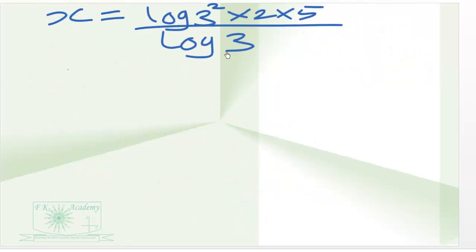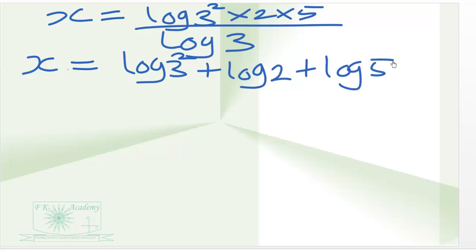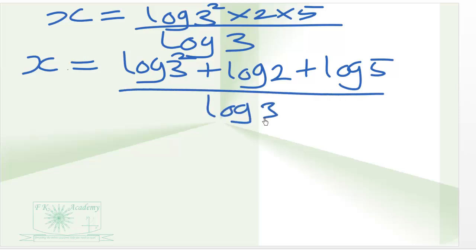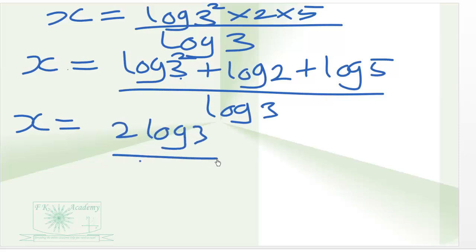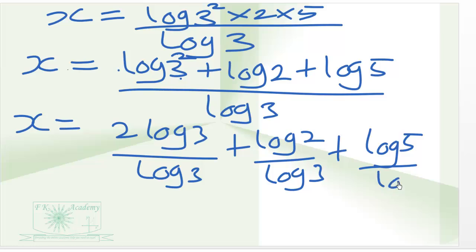We can now apply the multiplication rule of logarithm. So x will be equal to log 3 squared plus log 2 plus log 5, all divided by log 3. We can now share the denominator for the numerators, so we have x equal to 2 log 3 over log 3, plus log 2 over log 3, plus log 5 over log 3. The 2 log 3 over log 3 simplifies as the log 3 terms cancel.